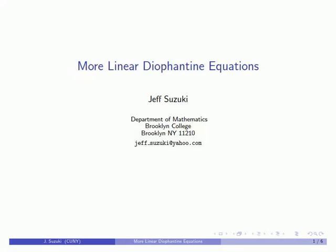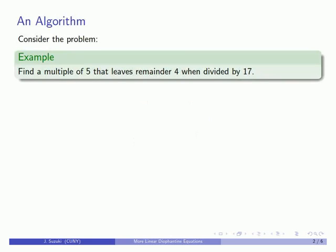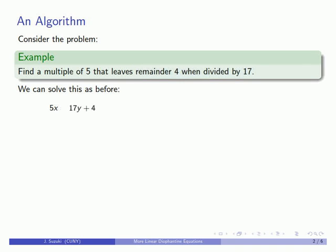Let's take a look at solving a couple more linear Diophantine equations. For example, we might want to take the problem: find a multiple of 5 that leaves remainder 4 when divided by 17. A multiple of 5 is going to be 5x, and if that's going to leave remainder 4 when divided by 17, it has to be a 17y plus 4 number.